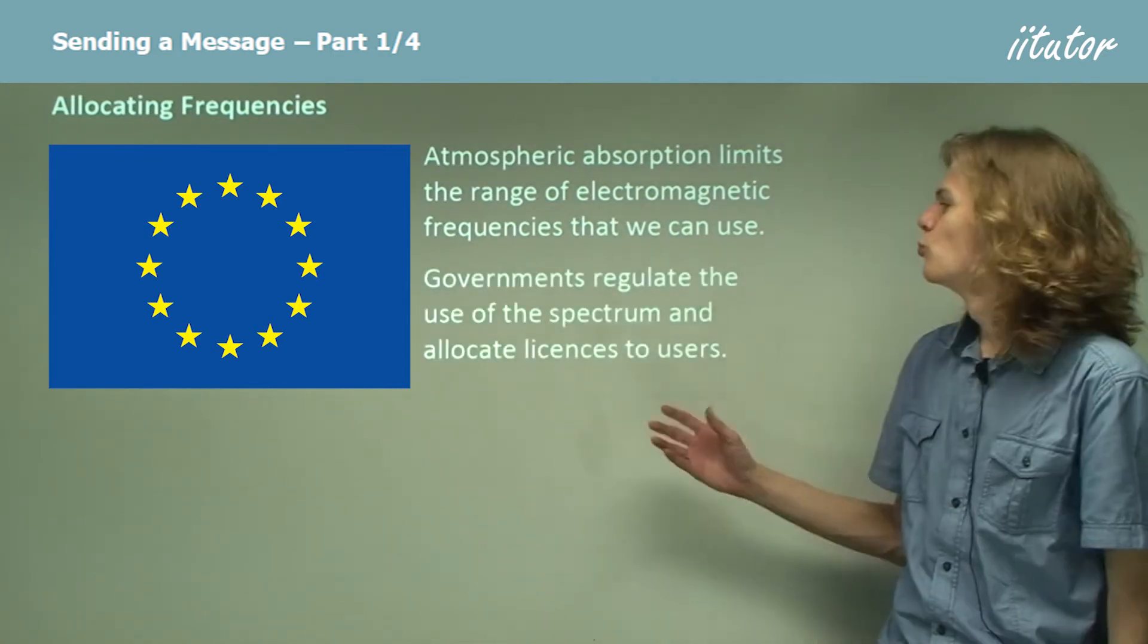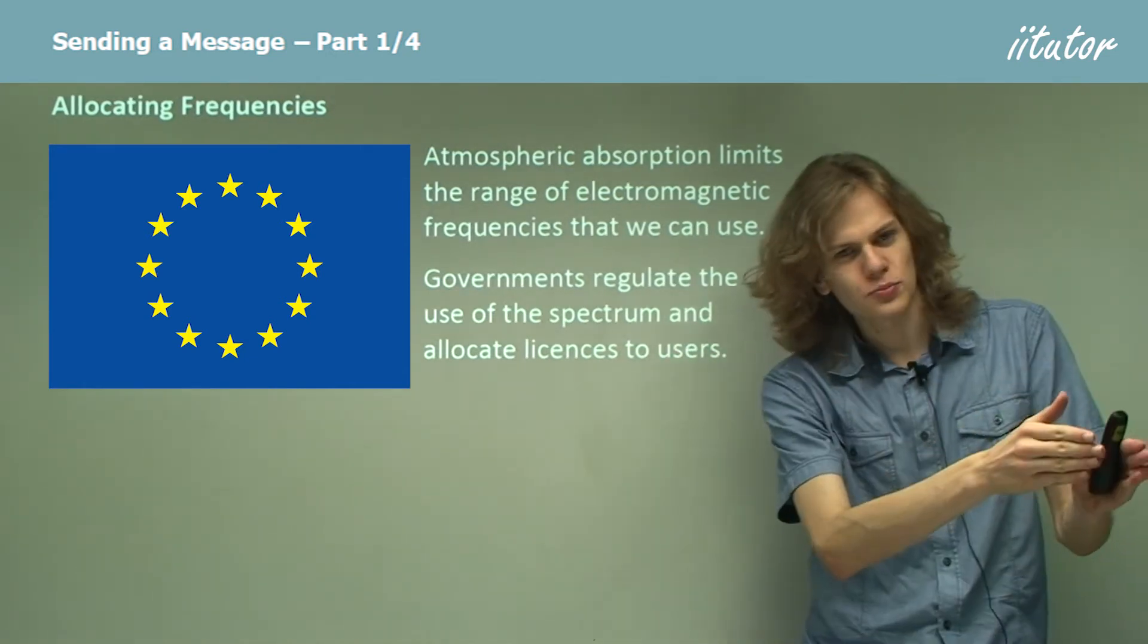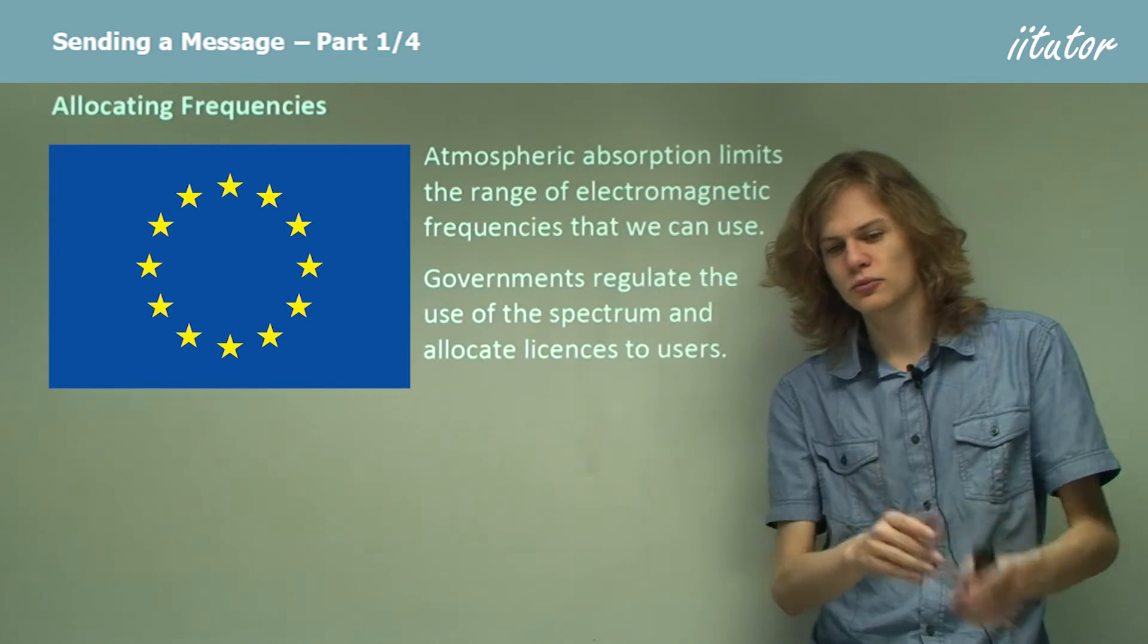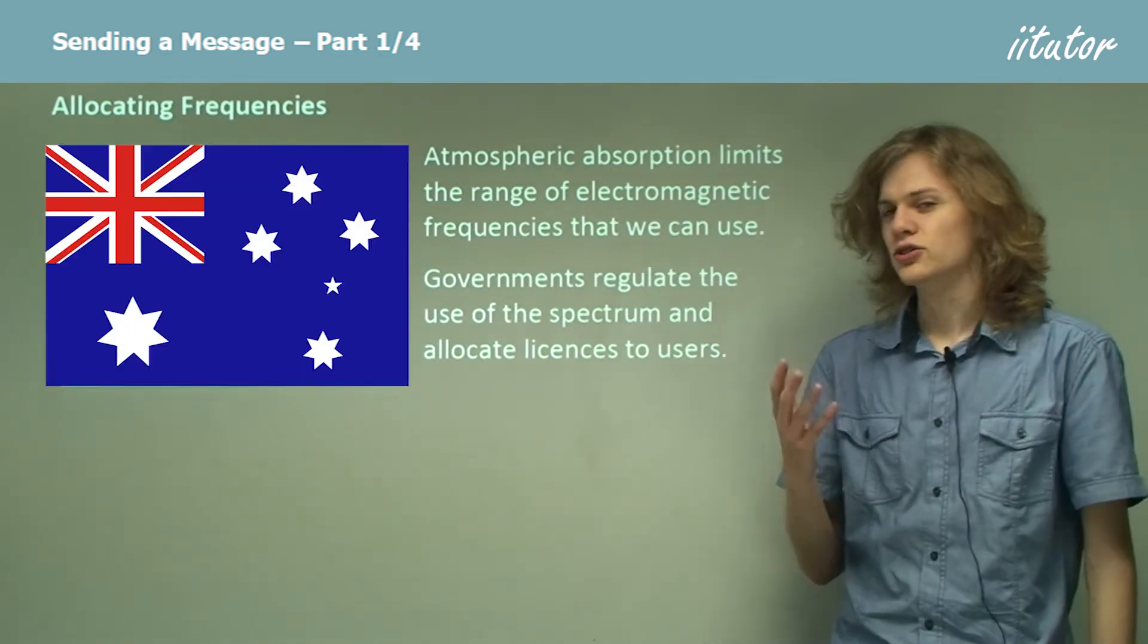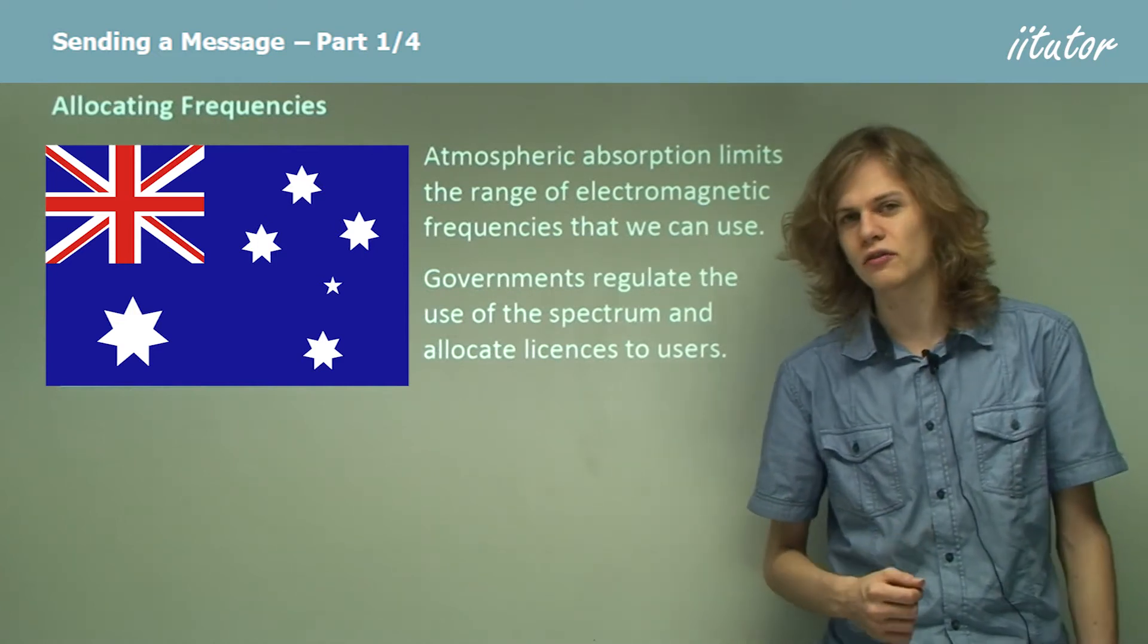So governments regulate the use of the spectrum. They say to people you're allowed to use this part of the spectrum, you're allowed to use this part of the spectrum and so on. In Australia that's done by the Australian Communications and Media Authority, a branch of the Australian government.